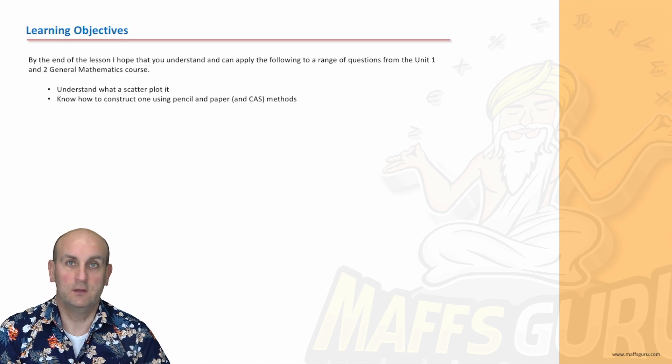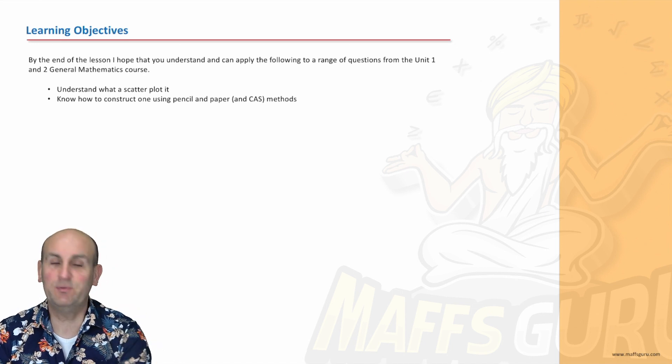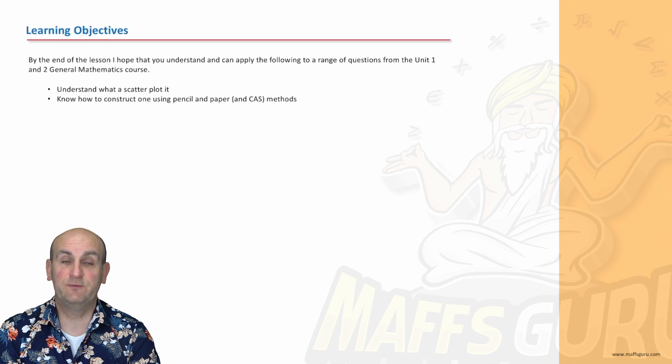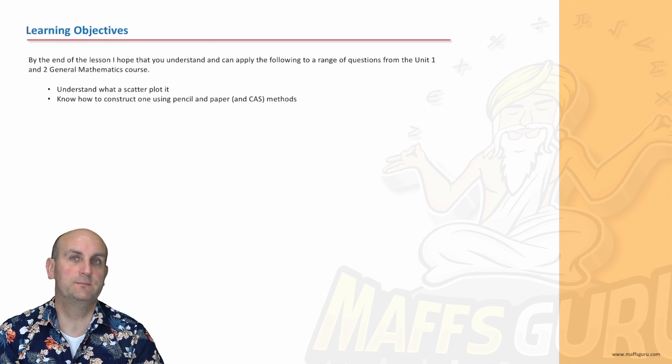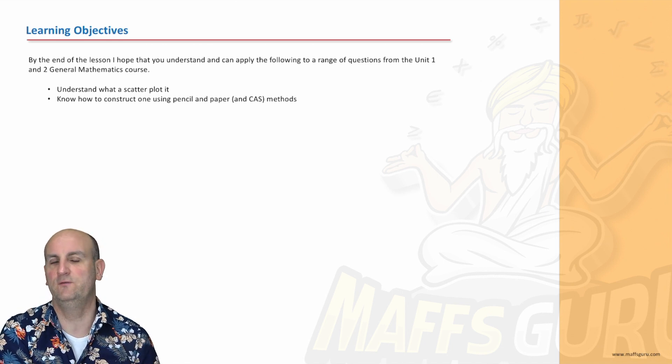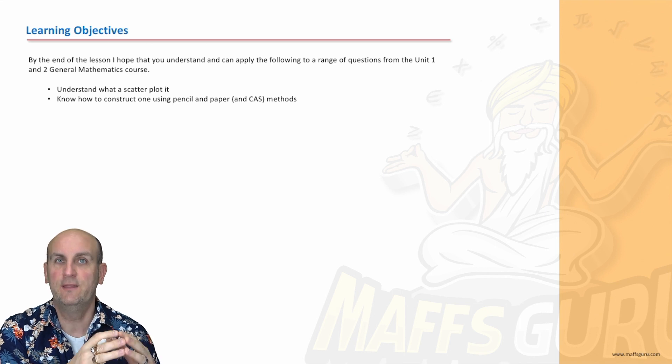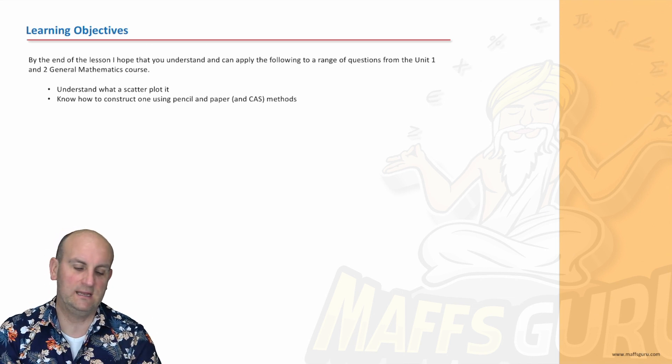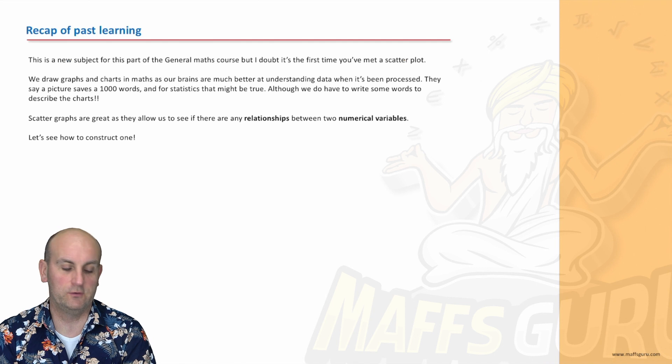So if you know what an explanatory variable is and a response variable, you are going to be smashing this in no time. We need to be able to construct one using pencil and paper and a CAS. A scatterplot, obviously. Now you may have done these before, but it's going to build on the work we did in the previous section on linear equations. That's where we are putting points together and getting equations of a straight line.